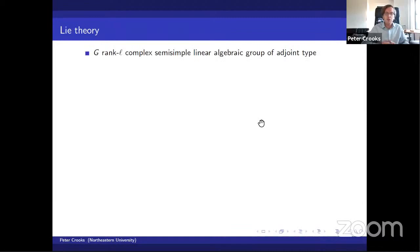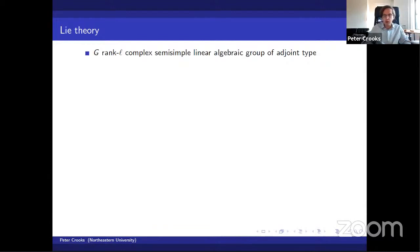Once and for all, I'm going to denote by capital G a complex semi-simple linear algebraic group of rank equal to L. I want this group to be of adjoint type. A paradigm example to keep in mind would be the projective special linear group, PSL_N, over the complex numbers, rather than the simply connected group SL_N. This will be needed for a construction a little bit later.